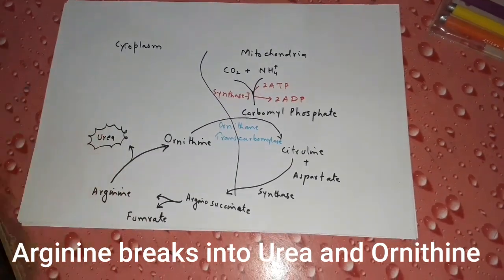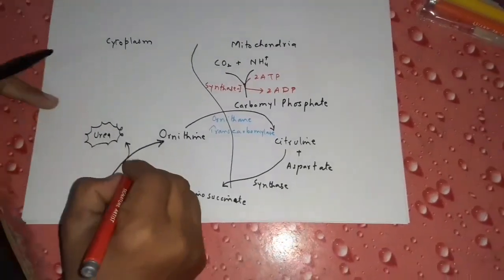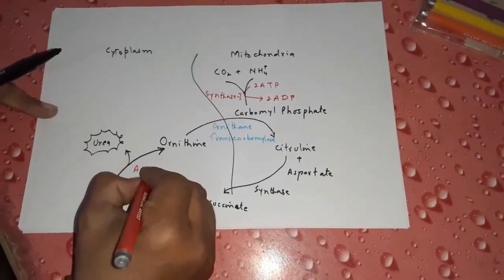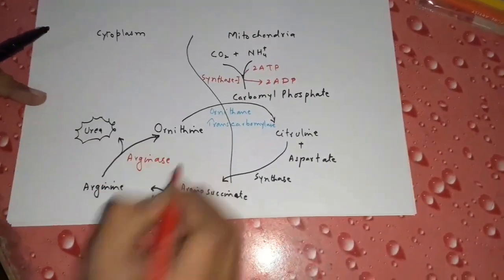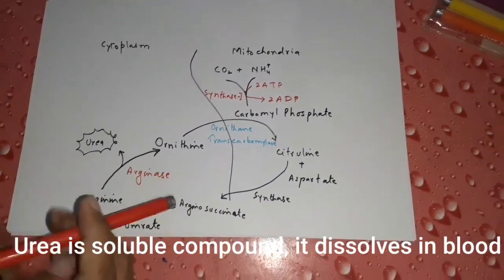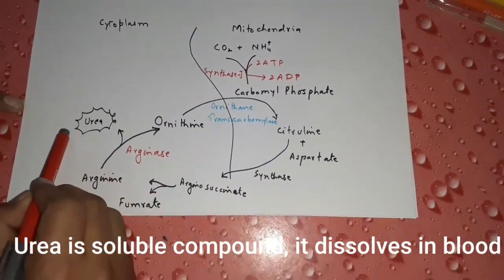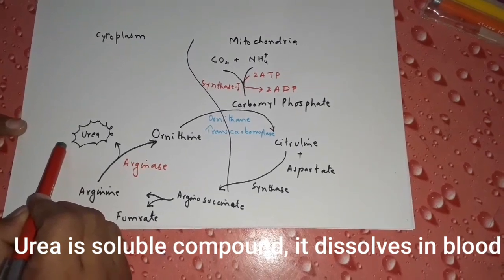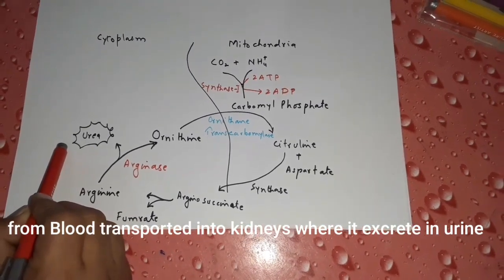Arginine is finally converted into ornithine, and urea is split off in the process. This reaction is catalyzed by the enzyme arginase.